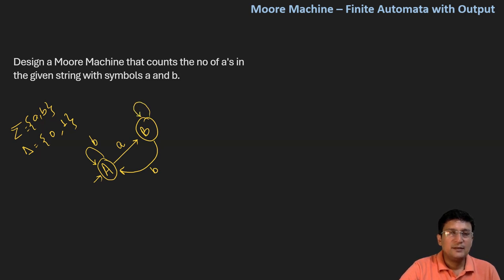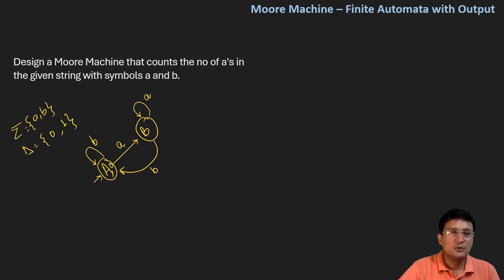But if I get A at state B, let's remain at state number B. Now, how do we count it? We can associate the output alphabet with state A — since I'm at state number A when I get B, let's associate zero here. And I come to state number B where whenever A comes, I'll mark one here.